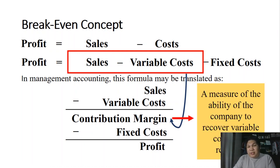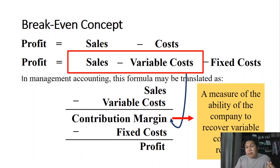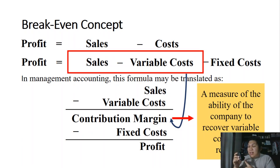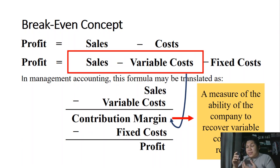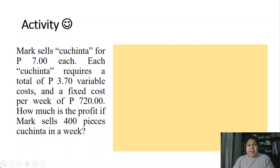The contribution margin is a measure of the company's ability to recover variable costs with revenue. Since variable cost varies with production and sales — when you sell more, you incur more variable cost — the contribution margin represents what remains after covering those variable costs. For example, selling one item at 150 pesos gives a certain contribution margin; selling two gives twice that amount.